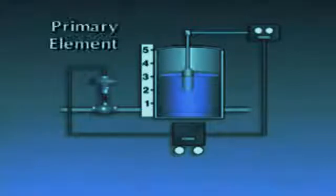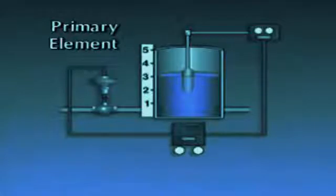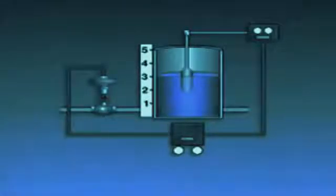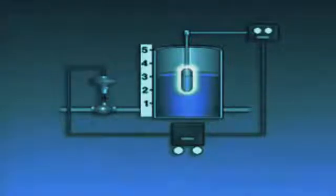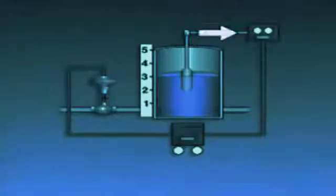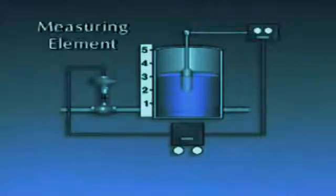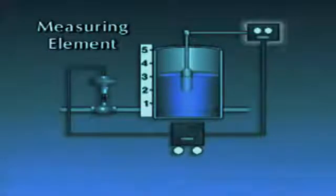One element, the primary element, is a sensing device that's located where the process variable is monitored. In this system, the primary element is a float that senses the level of water in the tank. The float is connected through a mechanical linkage to the second element in the system, a measuring element. In this system, the measuring element is a transmitter.